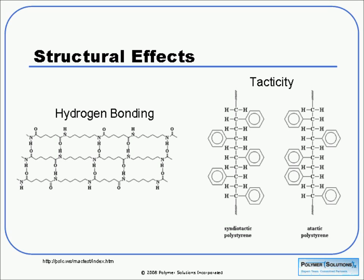Nylon 6-6 has carbonyl oxygens that line up with amine hydrogens and form hydrogen bonding, driving the chains to align and form crystals — so nylon 6-6 is usually found in crystalline form. Tacticity is another effect related to stereochemistry. Syndiotactic polystyrene has styrene groups alternating on different sides of the chain, so another chain lining up with it would fit together nicely. Atactic polystyrene, on the other hand, has those styrene groups randomly along its chain, making close packing very difficult. Indeed, atactic polystyrene is typically amorphous.